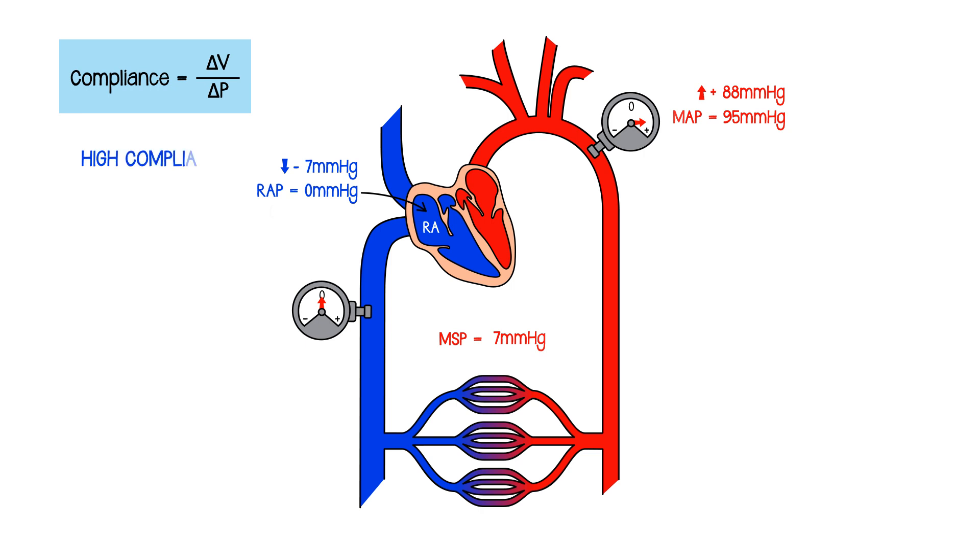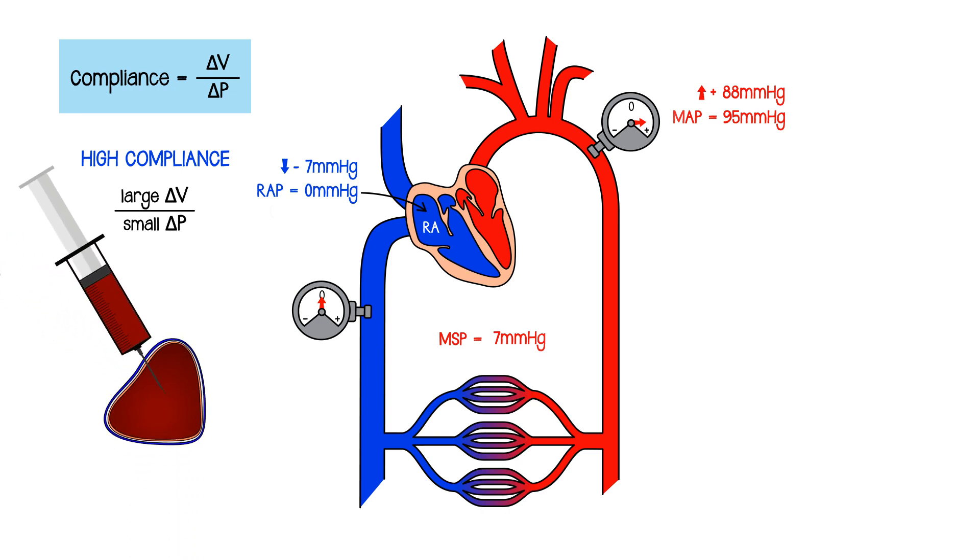On the venous side, the compliance is very high. And that means that you can have a big change in volume for a relatively small change in pressure. You can think of this as being like a floppy bag. The veins are like floppy bags. And that means that you can put blood into them, you can take blood out, but it doesn't change the pressure very much. The bag can just accommodate the differences in volume.